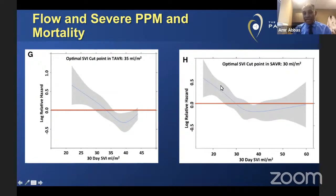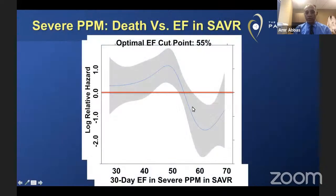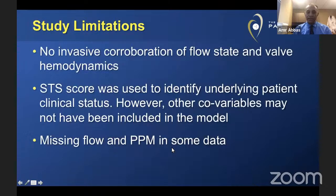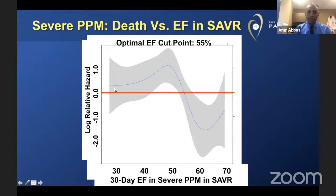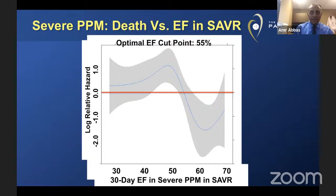In SAVR, the same pattern occurs but with a different cutoff of 30 milliliters per meter squared — below that, mortality was higher in the surgical group. Furthermore, in surgery, below an EF of 55%, there was a higher impact of severe PPM on mortality that was not noted when ejection fraction was greater than 55%. This means that whether TAVR or SAVR, in patients with severe PPM, lower flow is associated with a higher incidence of cardiac death.